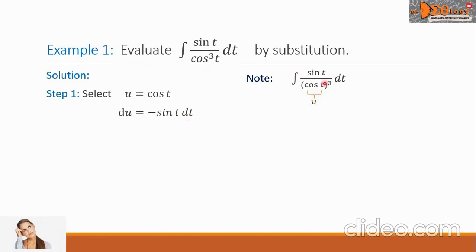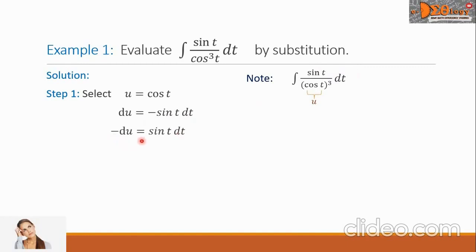Analyzing our integral, the remaining function is sin(t) dt, which is positive. So we multiply the equation by negative 1, giving us negative du equals positive sin(t) dt.